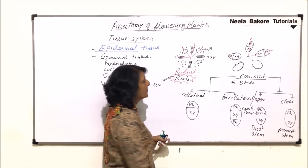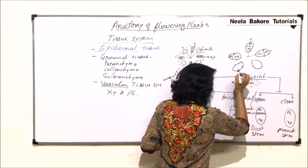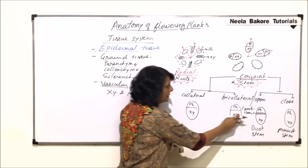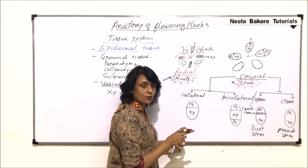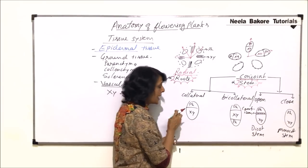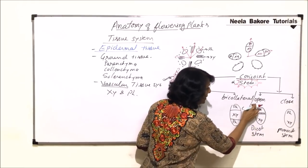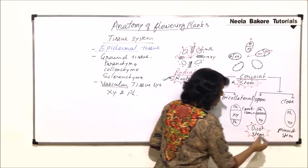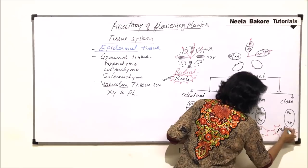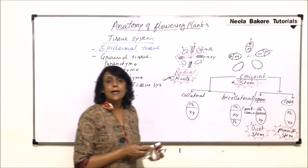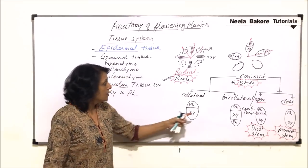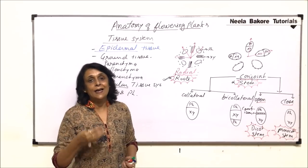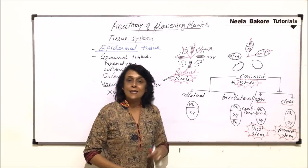Important things to remember: radial arrangement is characteristic of roots; conjoint arrangement is characteristic of stems. Conjoint and collateral — one end has phloem and the other end has xylem. Open conjoint collateral is characteristic feature of dicot stem. This is how we classify the bundles — one end has phloem, other end has xylem, or two ends have phloem and xylem is in the middle.